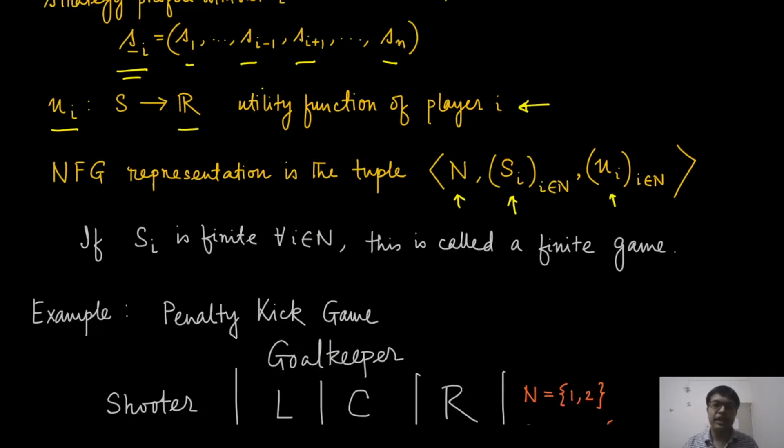Now if S_i is finite - we know that the set of players is already finite - if S_i is also finite, then this is called a finite game. There are certain things that we can say about finite games which we cannot say in the context of infinite games.